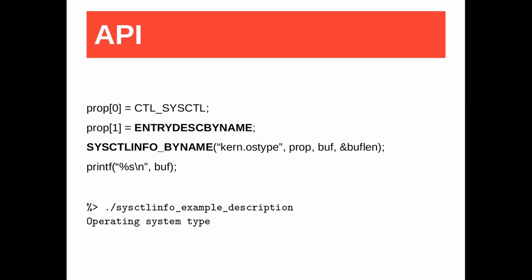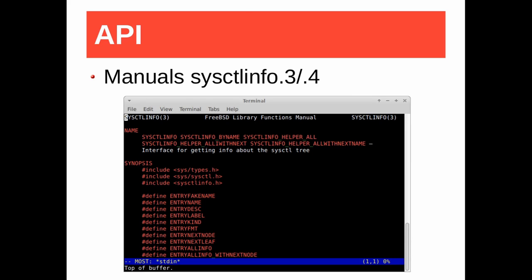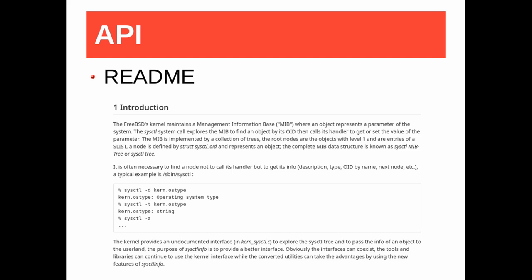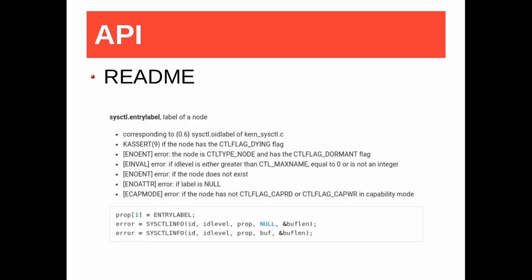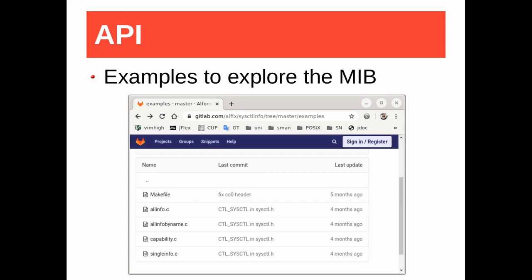I added these macros while I was converting the sysctl utility. sysctl info is documented by two manual pages: one in the fourth section to describe the sysctl nodes, and another in the third section to describe the macros. A README file is also available with an introduction, implementation notes, API, and FAQ. Each feature has a short description, an example, its constants, and possible errors. Here is an example to get the label of an object. Finally, there are public domain examples for getting started with projects to explore the MIB.